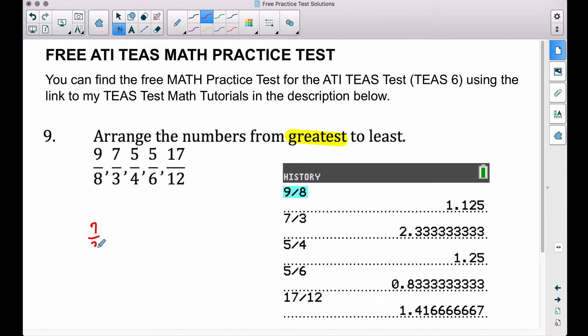So with that said, the greatest one that we see here is the two dollars and 33 cents, so that is the 7/3. We're going from greatest to least, the next one we have is going to be the one dollar and 42 cents roughly, that's the 17/12, followed by the 5/4, that's the dollar and 25 cents.